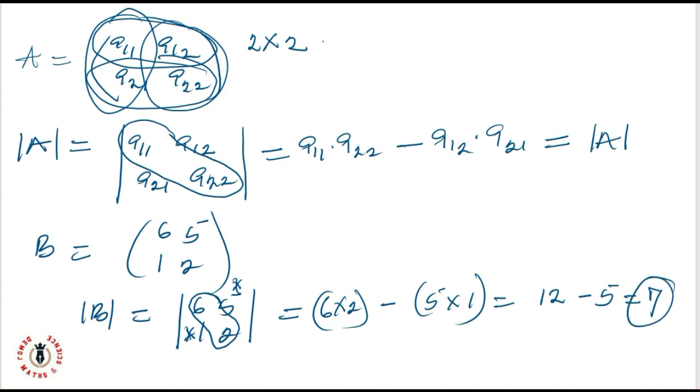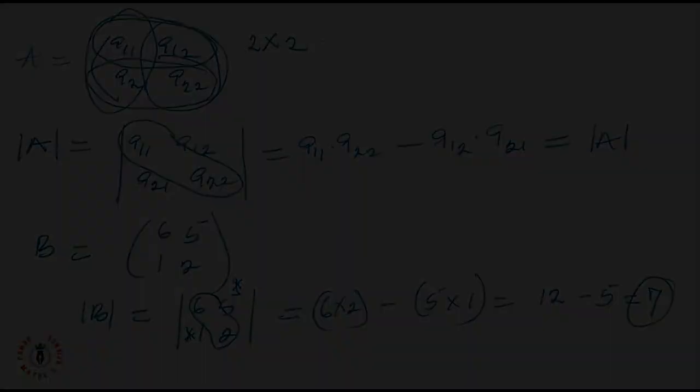Now, let's see how to deal with a 3x3 matrix. The 3x3 matrix, typically if I have matrix A, which is given as A11, A12, A13, A21, A22, A23, A31, A32, A33.